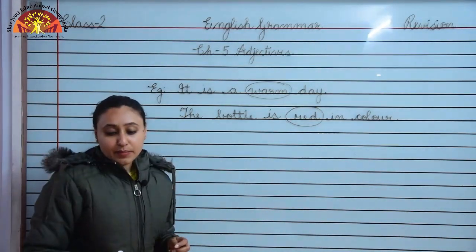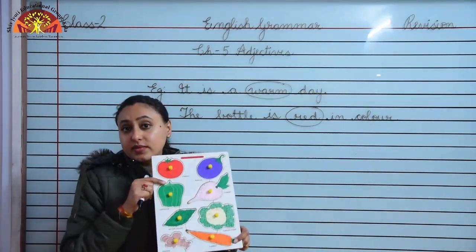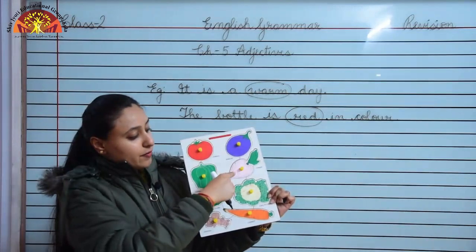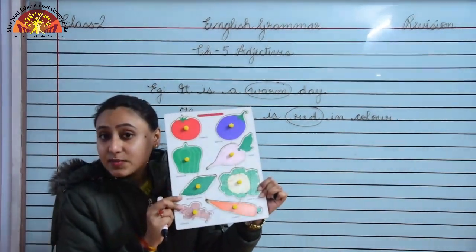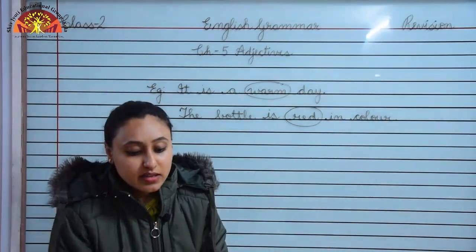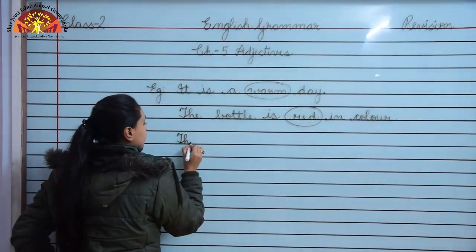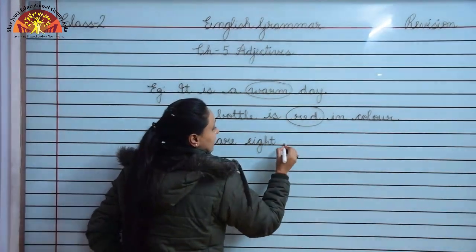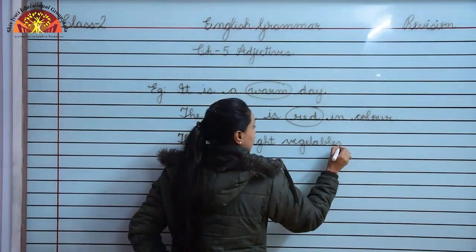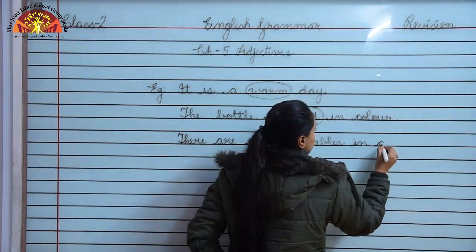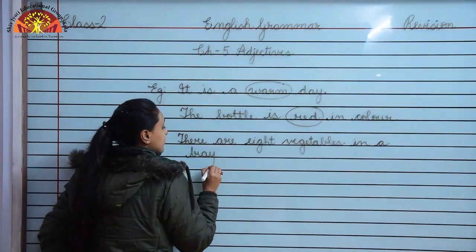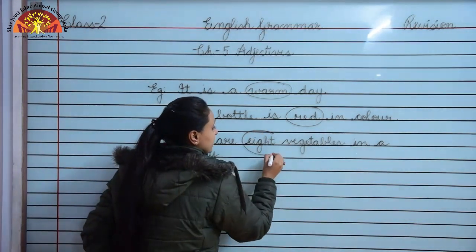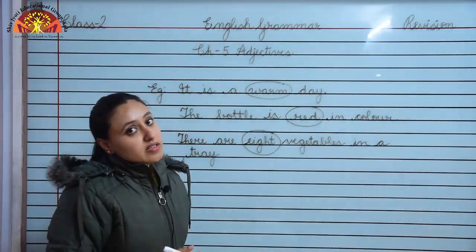Our next example is: there are 8 vegetables in this tree. Look over here, we will count together - 1, 2, 3, 4, 5, 6, 7 and 8. How many vegetables are there? There are 8 vegetables in a tree. This shows us that quantity or number also describes a noun.